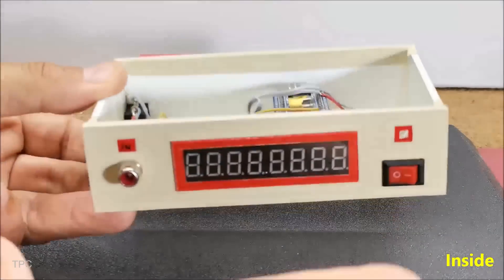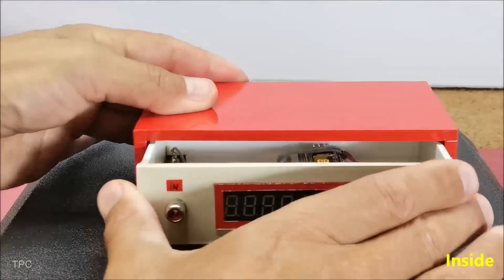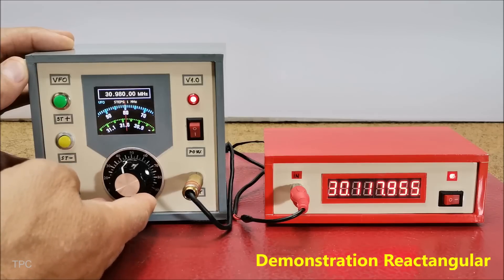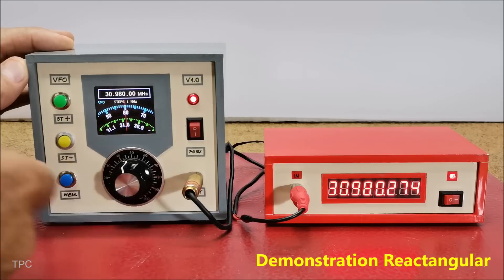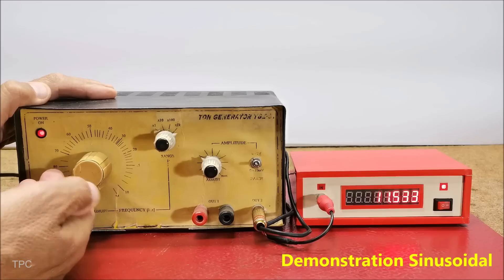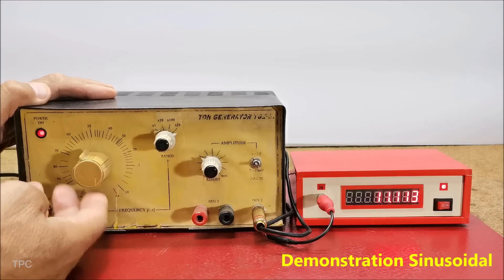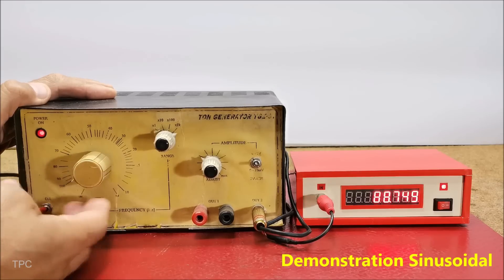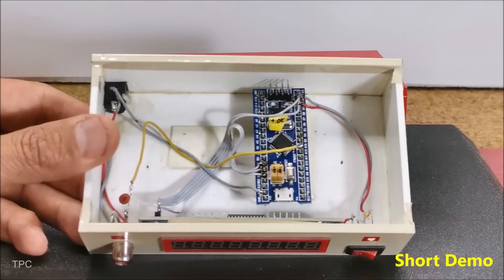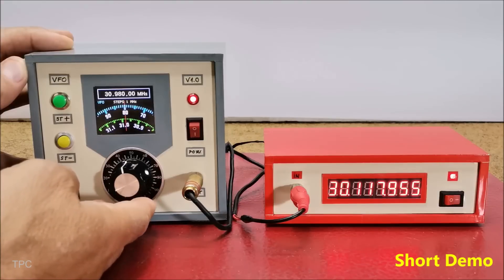The frequency meter is easy to assemble, with the code available from the RCL radio website. With a frequency range of 0 to 40 MHz, it's perfect for testing high-frequency radio signals. After testing with different signal generators, the meter showed accurate results with only minor variations, more than acceptable for such an affordable device. This budget-friendly instrument is a great addition to any electronics workbench.